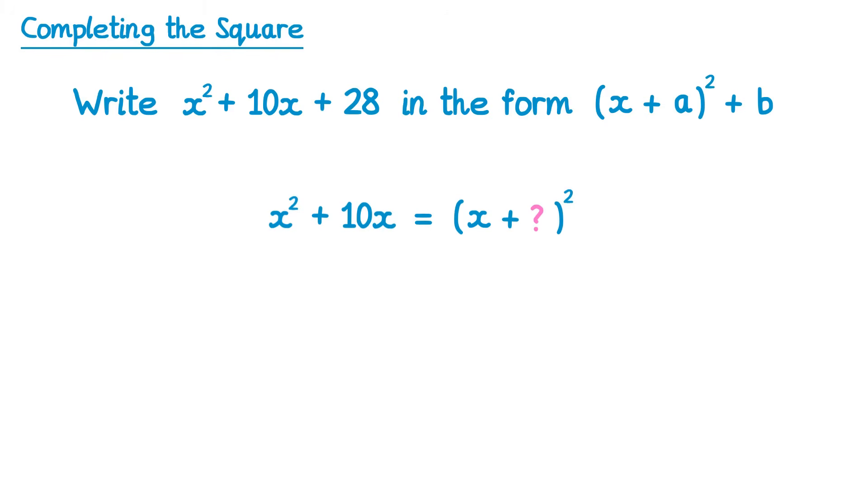Now in our question we have x squared plus 10x. So we need to think of a number, which when we double, gives us 10. And that's obviously 5. So the bracket must have come from x plus 5 all squared.